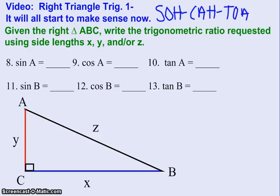So for this set of problems, we have a right triangle ABC where the side lengths are defined by an X, a Y, and a Z. And we are going to practice writing ratios requested using our sides. And remember, ratio means fraction. So for problem 8, it says write the ratio for the sine of angle A.